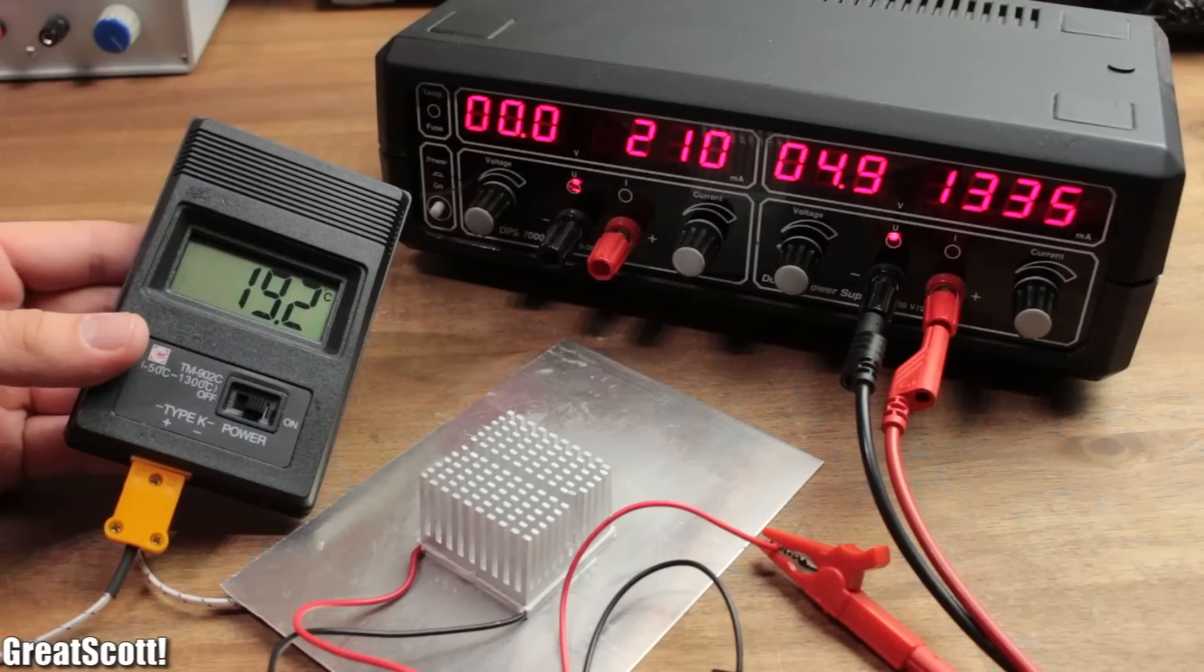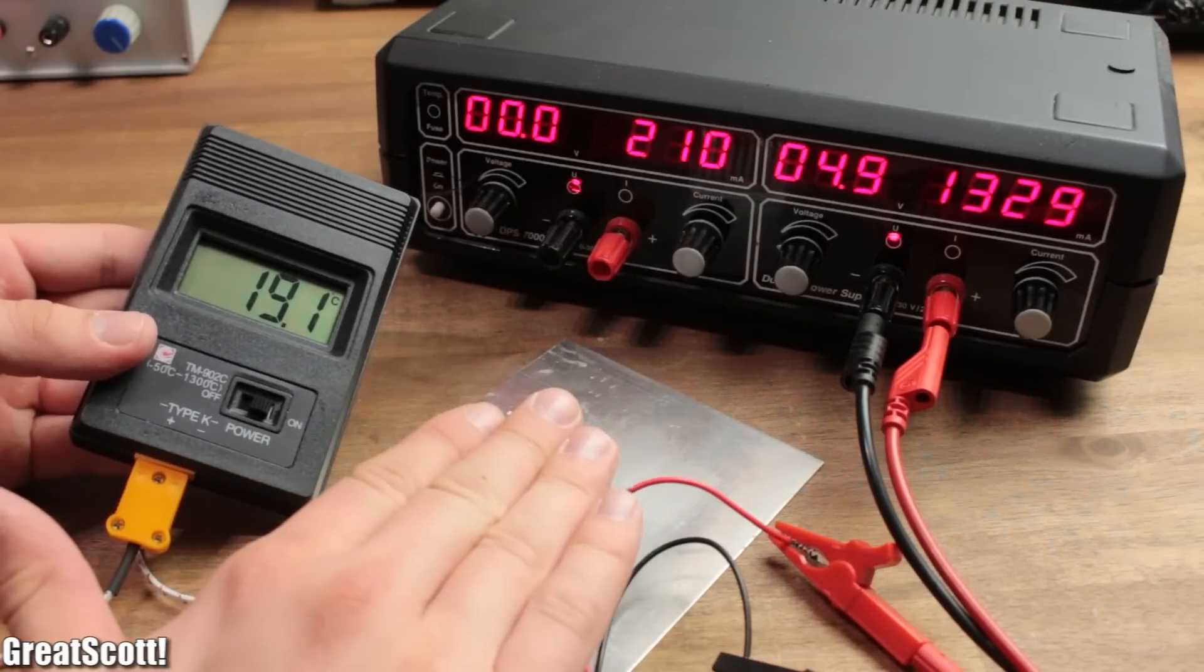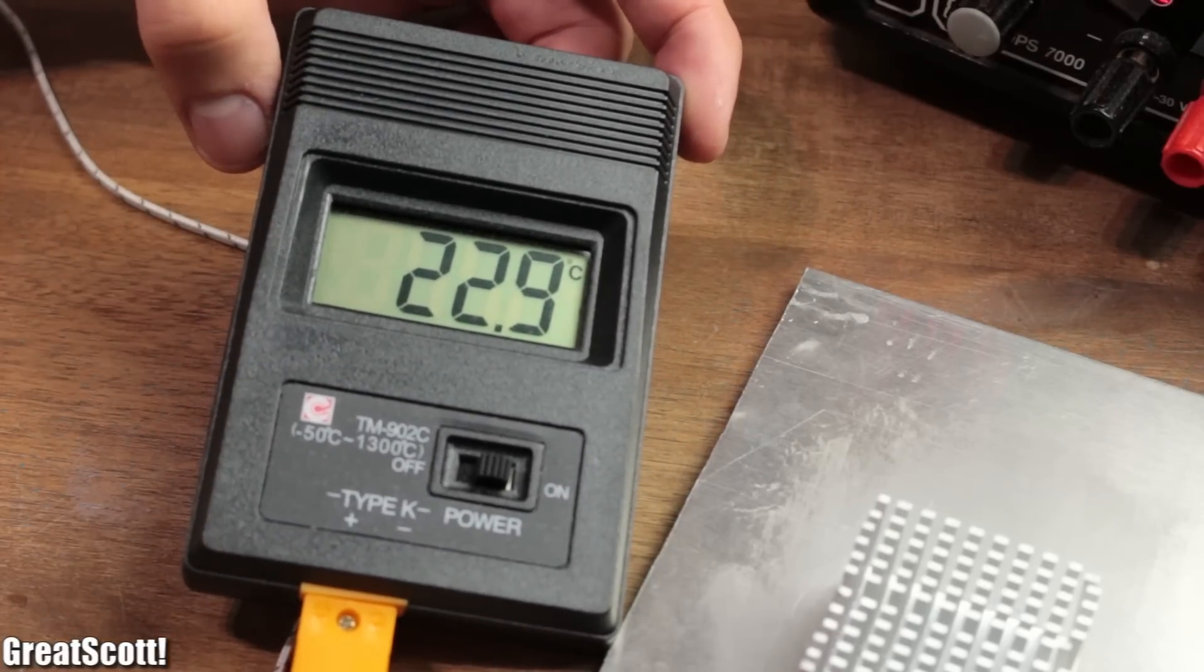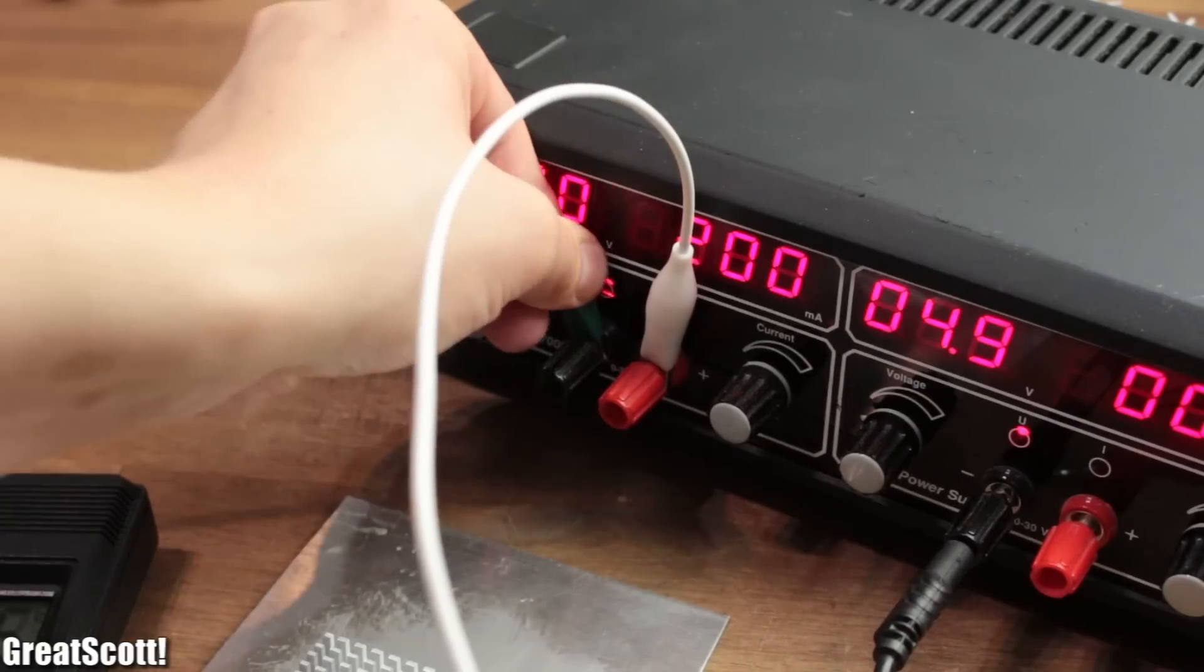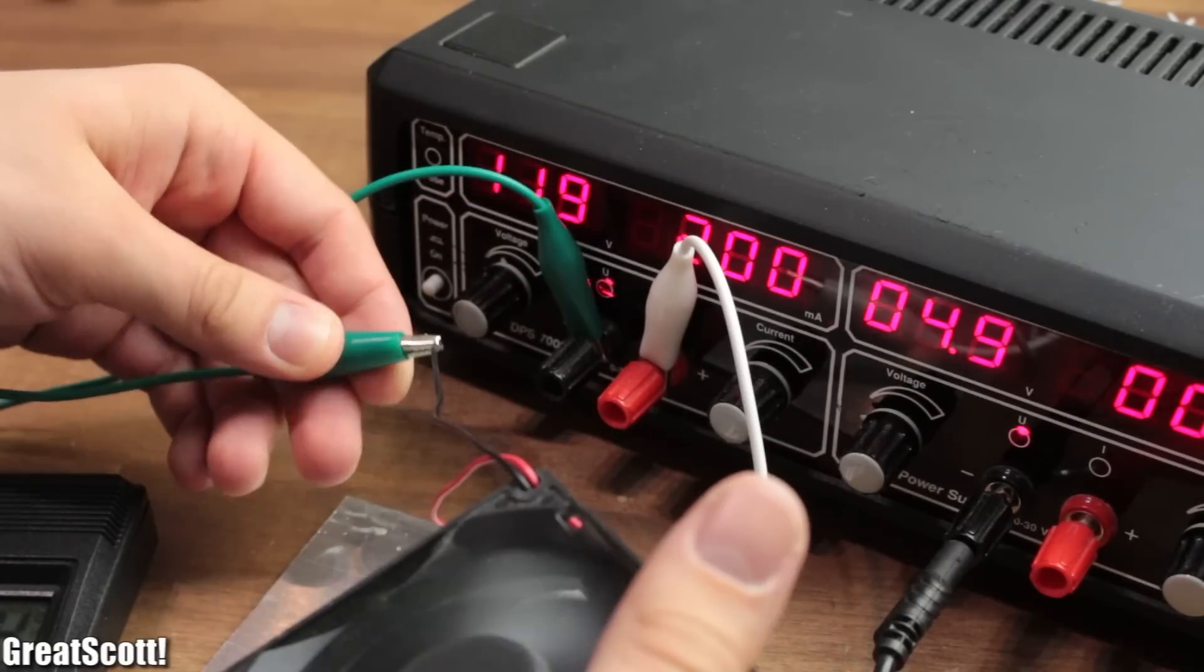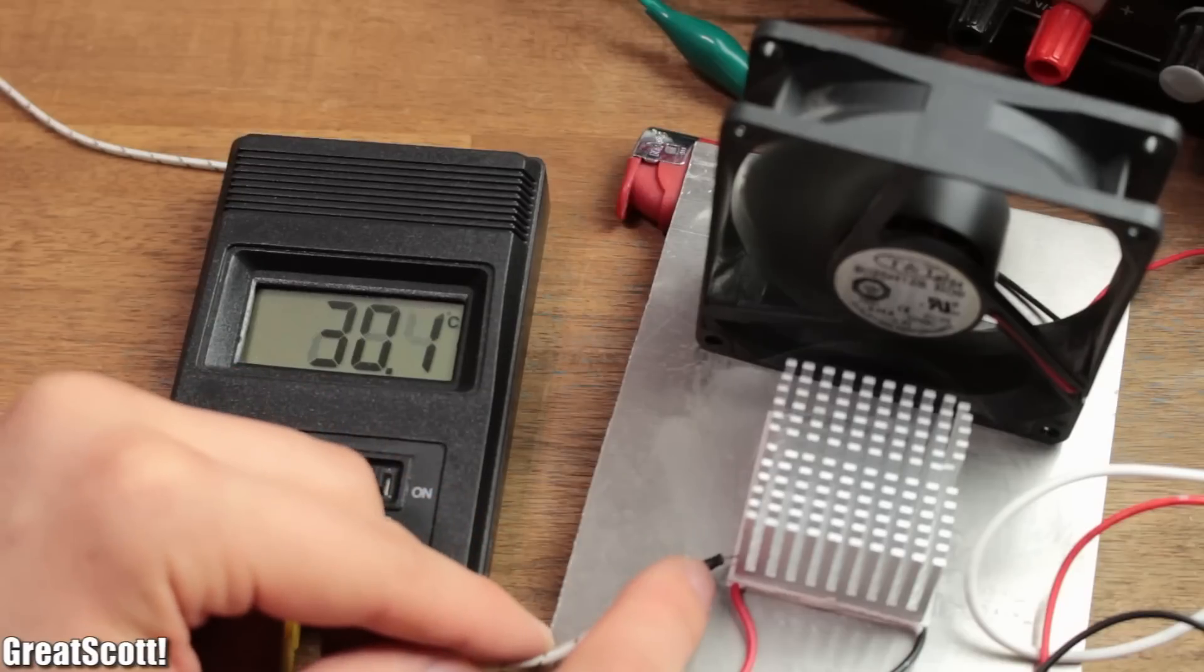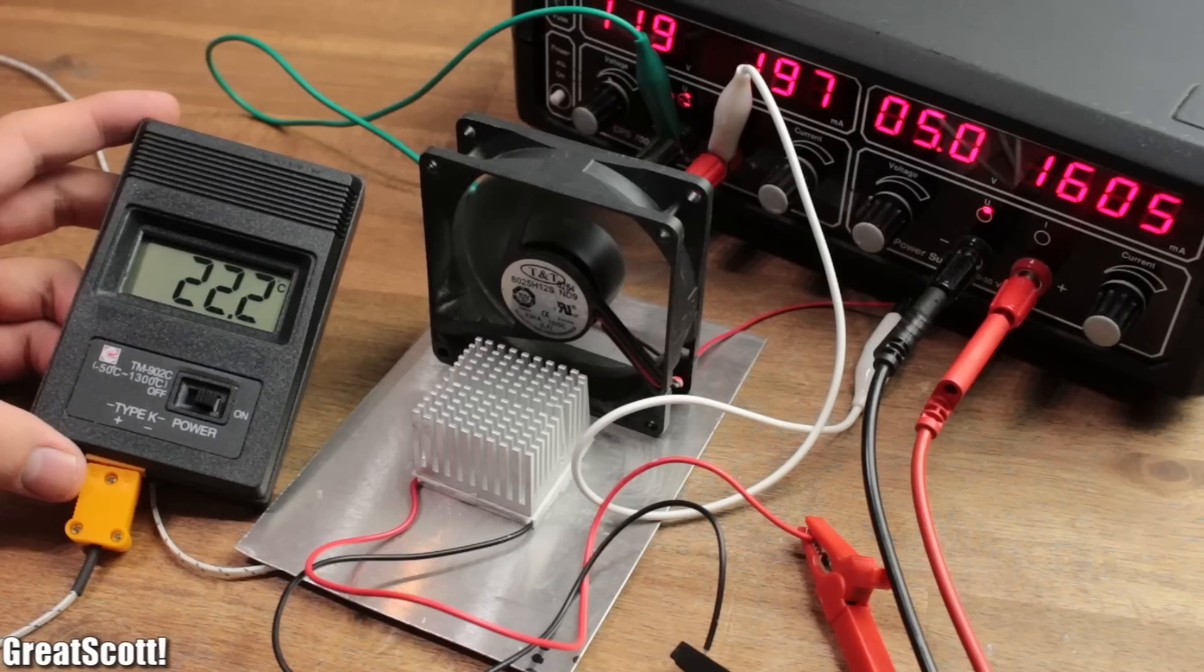The cold side started with 19 degrees but slowly rose up to 23 degrees since the module can only achieve a certain temperature difference. Meaning that if I would use an active cooling on the hot side, the temperature of the heatsink is lower and I can achieve a lower temperature on the cold side as well.